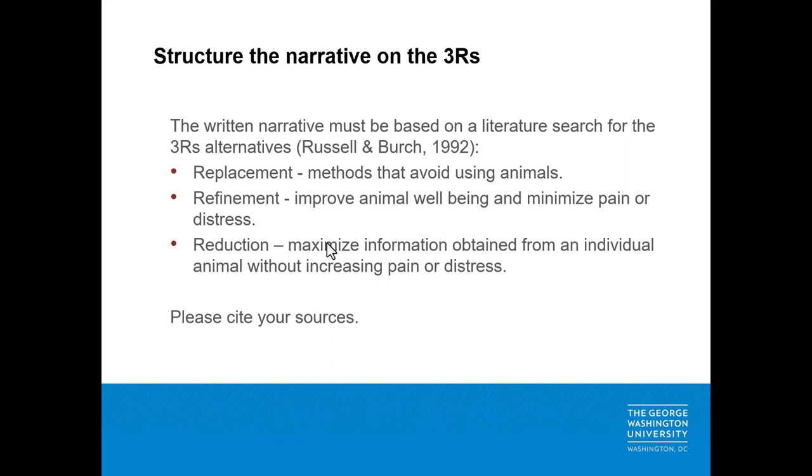Alternatives to animal use in research, defined as the 3R's by Russell and Birch in their book The Principles of Humane Experimental Technique, are: Replacement, referring to methods that avoid using animals — these include replacing animals with computer systems, organ-on-a-chip, or replacing vertebrates with invertebrates; Refinement, referring to modifications of husbandry or experimental procedures to improve animal well-being and minimize pain or distress; and Reduction, referring to maximizing the information obtained from a given number of animals without increasing pain or distress.